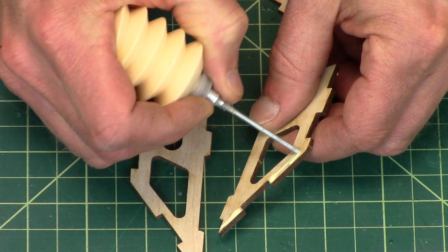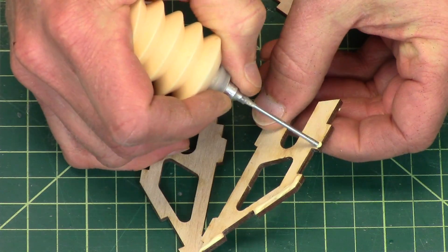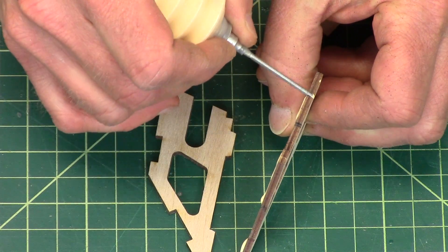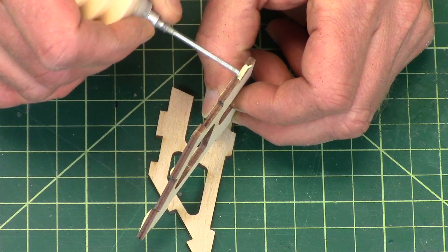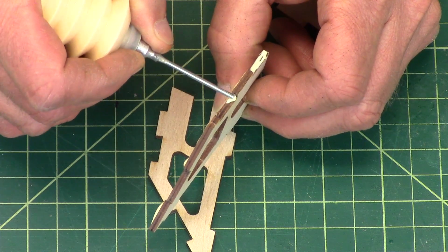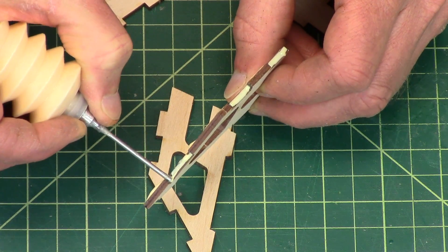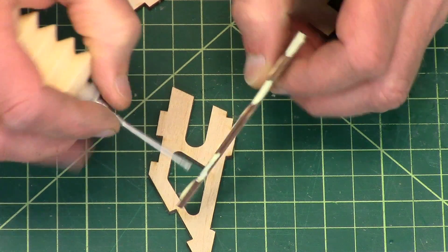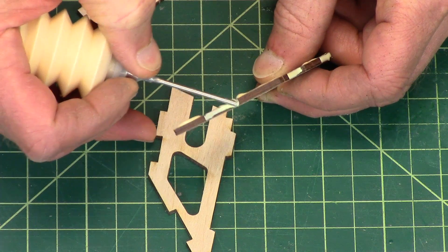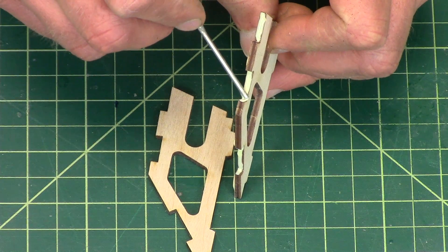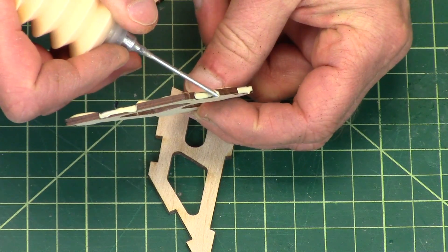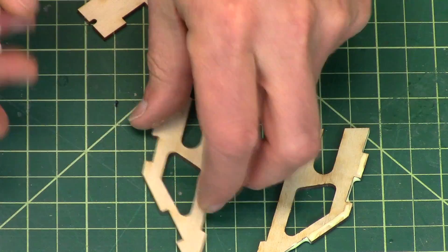I have paper towels ready to go because you're going to be cleaning up some of the glue mess. So I'm putting it on the tops. And I'll also get into those little corners because the pieces touch there as well. I'm going to do both sides.